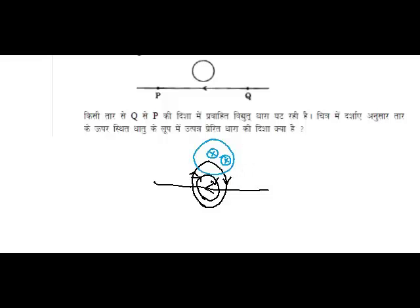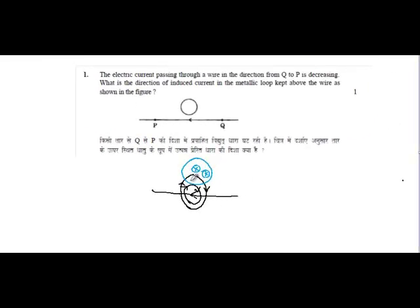Now the tendency of the circuit will be to increase this field. Because by Lenz's rule, the current will flow in such a way so that the field in this direction increases, which means the current should flow in the anticlockwise direction.